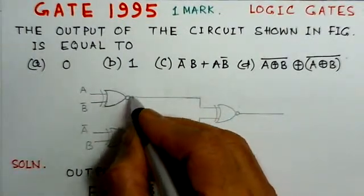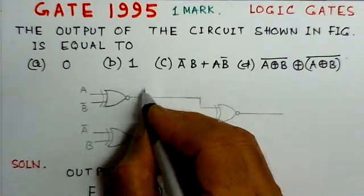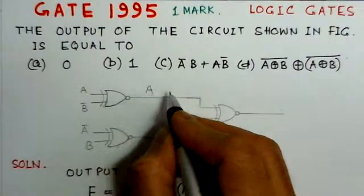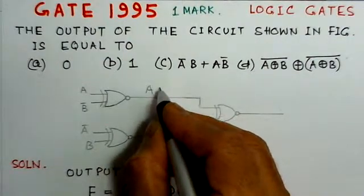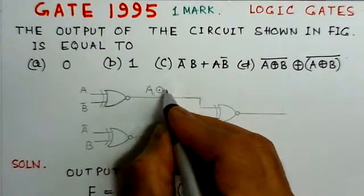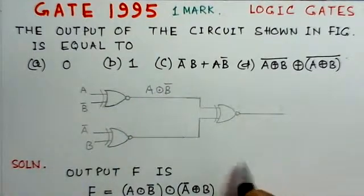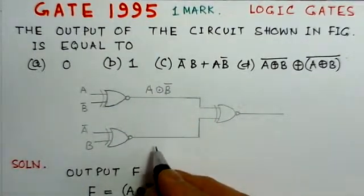So if we see here from this XNOR gate, we can write here the corresponding output here, A and then exclusive NOR of B bar. This will be the output at this gate.